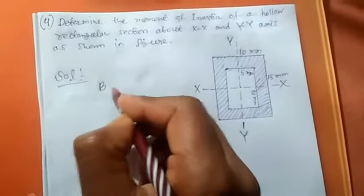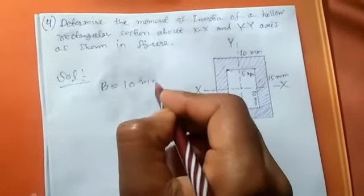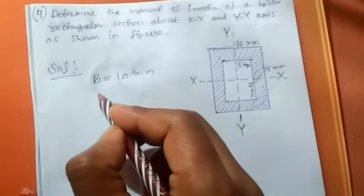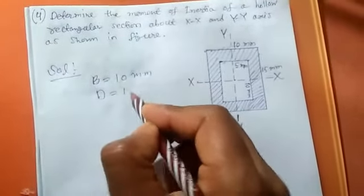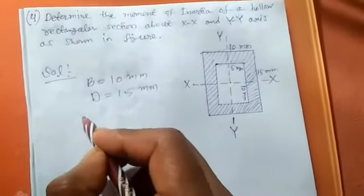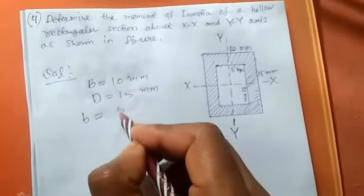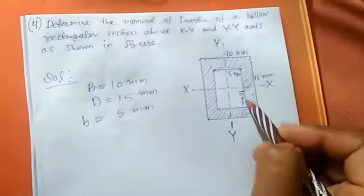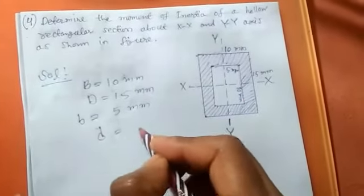Capital B equals 10 mm, this is the width of outer rectangle. And capital D equals 15 mm, depth of outer rectangle. And small b is 5 mm, width of inner rectangle, and small d, that is depth of inner rectangle, 10 mm.